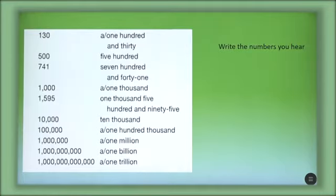Now let's see the large numbers. The first one, 130 or one hundred and thirty. Second, 500. Next, 740. 21. A thousand or one thousand. 1,595. 10,000. 100,000. One million. One billion. And one trillion.